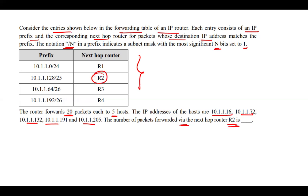We need to calculate how many packets are forwarded via next hop router R2. So let's calculate one by one. As per the question, the router is going to forward 20 packets each to 5 hosts.